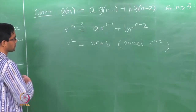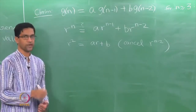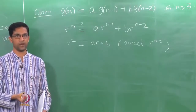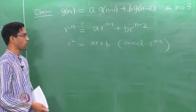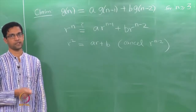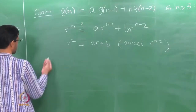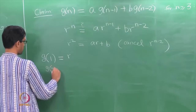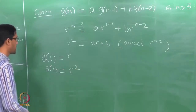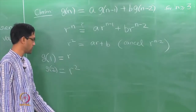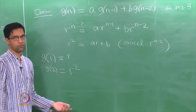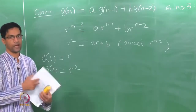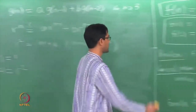Of course, in order for this to give us f of n directly, g would need the same initial values as f. The initial values of g are g of 1 equals r and g of 2 equals r squared, which are in general complex numbers and may not equal the given initial conditions p and q. But this is a very good beginning — we already have a sequence satisfying the recurrence, and it is only the initial conditions that require some work.